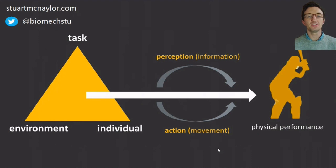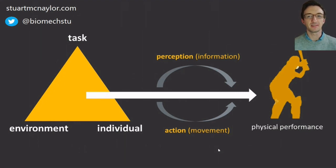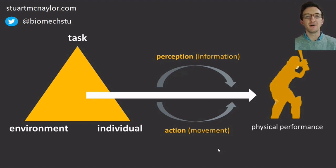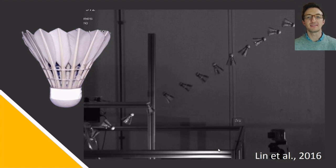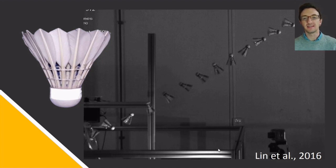Understanding the multifactorial relationships determining performance within such sports has required an understanding of the interactions between individual, task, and environmental constraints. However, before we can investigate the effect of any parameter on performance, we need to be able to accurately measure the performance outcome that we're interested in.